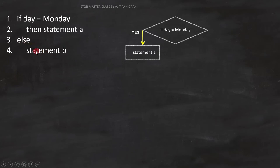That means line number 4, statement B will execute. Since it is a statement, we can represent it like this.